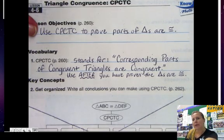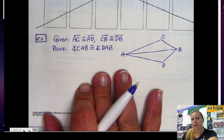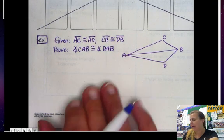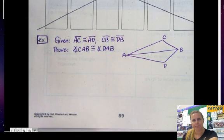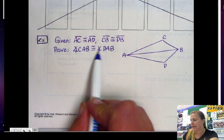So let's do an example proof right here. Go ahead and pause the video and copy everything down. Okay, welcome back. And we're going to now prove that angle CAB is congruent to angle DAB.